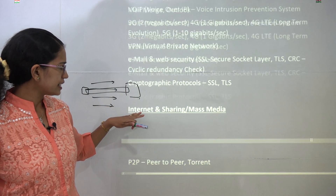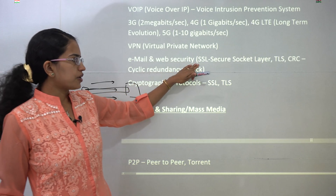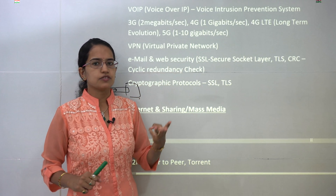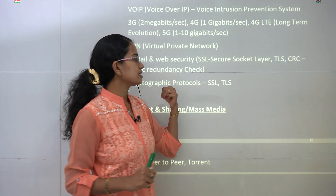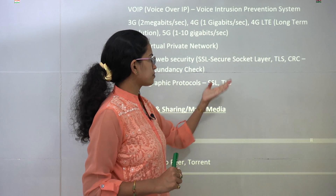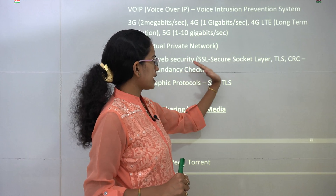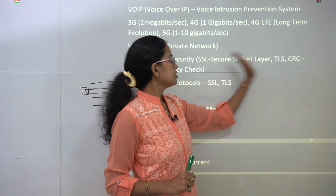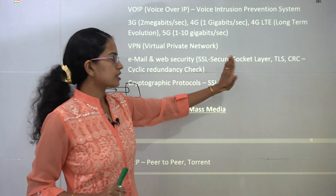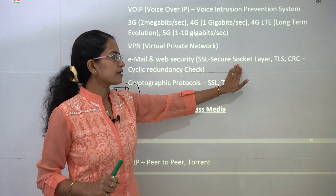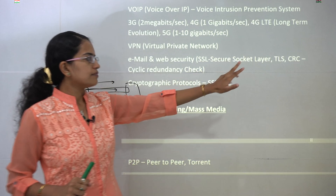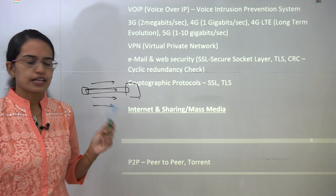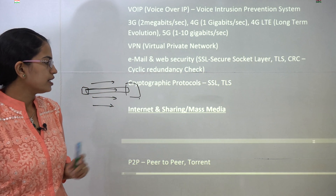The next is email and web security. There are two types of cryptographic protocols: SSL — Secure Socket Layer — and TLS. You also have CRC, which is Cyclic Redundancy Check, and that is again very important.